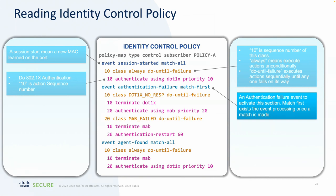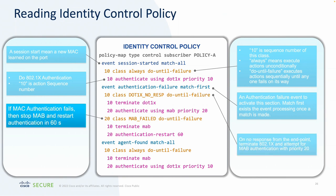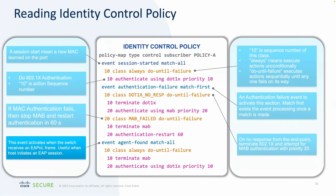From an authentication failure event: the first class handles no response from the endpoint — in that case I terminate 802.1X and authenticate using MAC Address Bypass. In the next class, if MAB has also failed, I terminate MAB and restart authentication in 60 seconds, essentially restarting the whole thing. And the last class handles the case where an agent is found, with its own methodology. Very malleable overall.